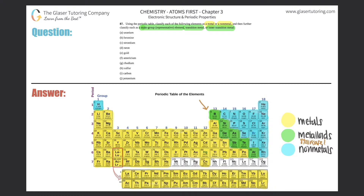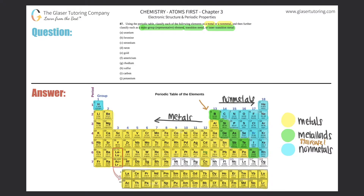If you can spot the staircase out, you know where your metals and non-metals are. Anything to the left of the staircase is classified as metals — shown in yellow. Anything to the right of the staircase is non-metals. There's one exception: hydrogen is the only non-metal in the metal category — memorize that. All other elements to the left of the staircase are metals.